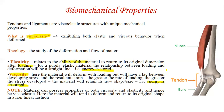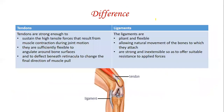Tendons and ligaments act as viscoelastic materials because they will not return to their original shape with complete energy stored. Instead, they will lose some amount of energy, and whenever they return to their original shape, they do so in a non-linear manner.